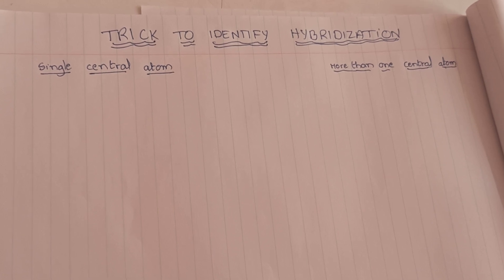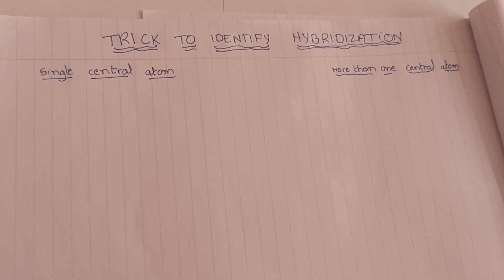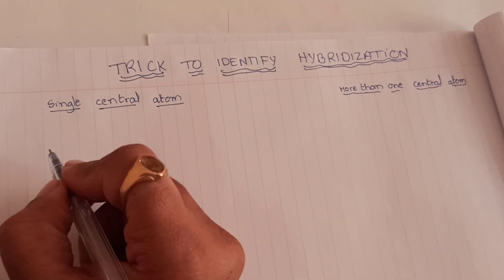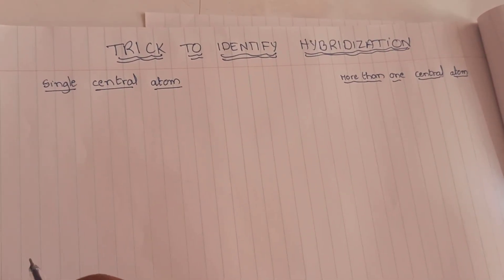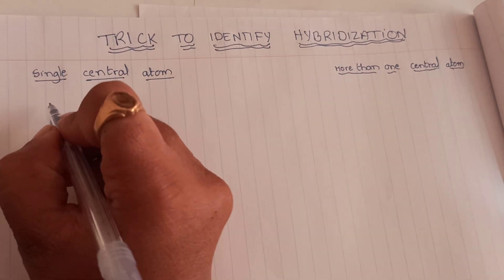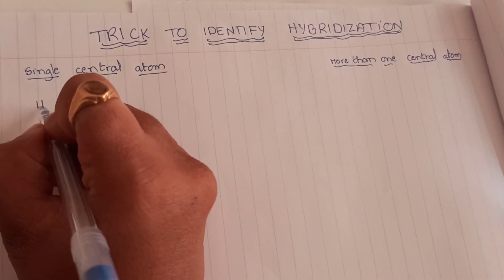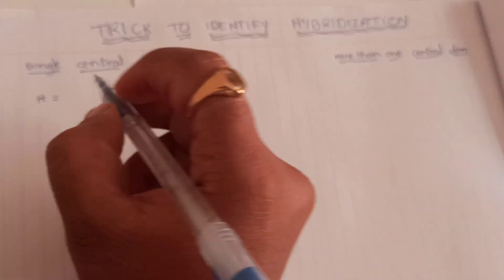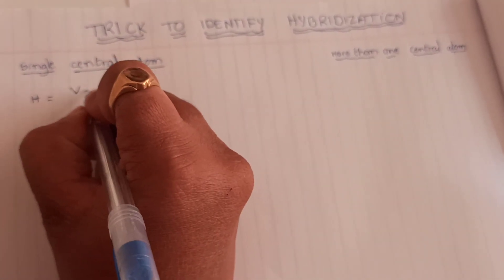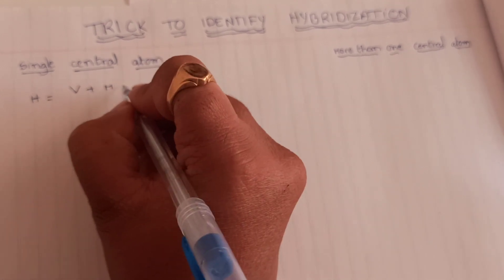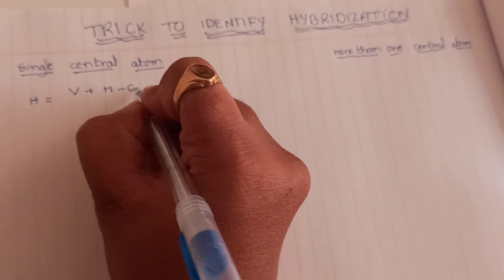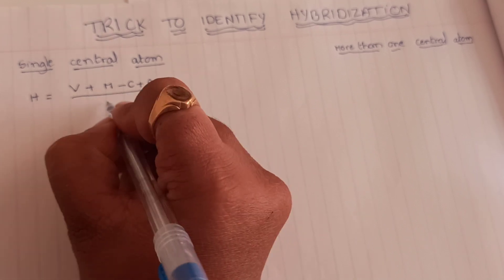One is if your molecule has a single central atom, we have to follow one method, and when there are more than one central atoms then we have to follow a different way. Let us begin with a single central atom. I am going to give a simple formula to find hybridization number: H equals V plus M minus C plus A, whole divided by 2.